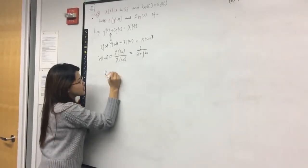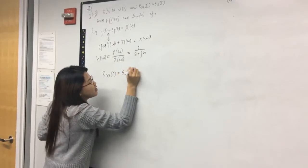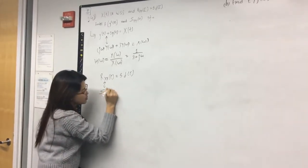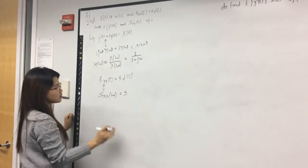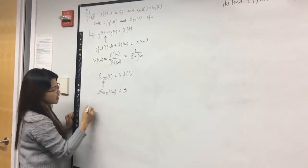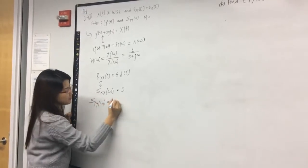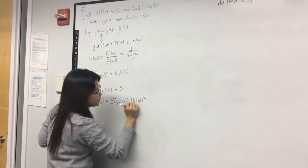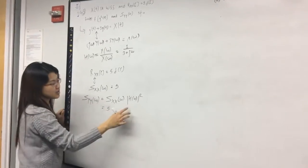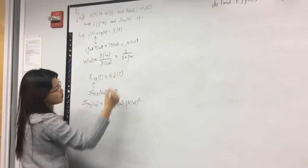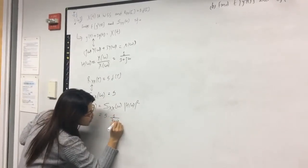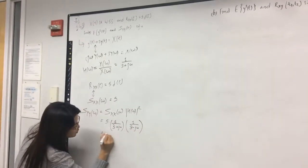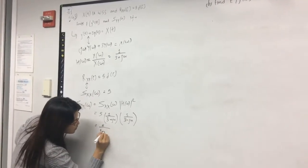The autocorrelation R_xx(τ) = 5δ(τ). Taking the transform gives the input power spectrum S_xx(ω) = 5, since the transform of the delta function is 1. The output power spectrum is the product of the input spectrum and the squared magnitude of H(ω): S_yy(ω) = 5 · |H(ω)|² = 5/((3 + jω)(3 − jω)) = 5/(9 + ω²).